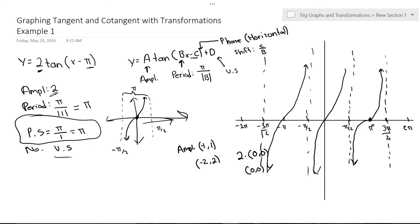Hope this was able to help. I hope you understand that the phase shift just moves everything over pi units, and the amplitude doesn't do much to a tangent graph. There's no vertical shift. Let me know if you have any questions.